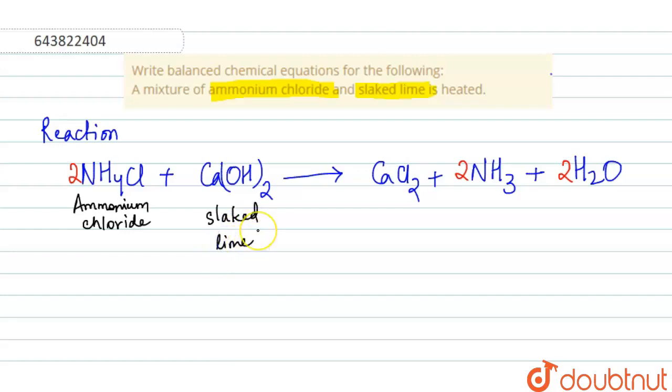Please write the reactants accordingly. Do not write calcium hydroxide, write slaked lime to show that you know that Ca(OH)2 is slaked lime. Then this is calcium chloride, this is ammonia, and this is water.